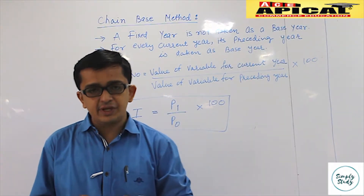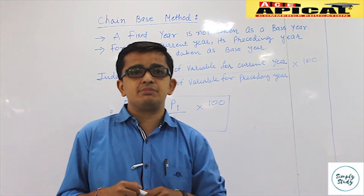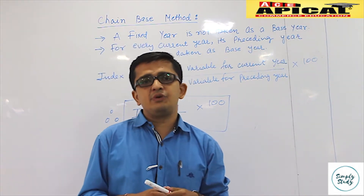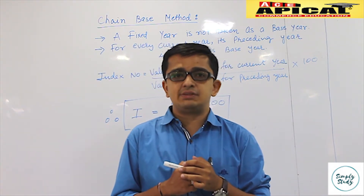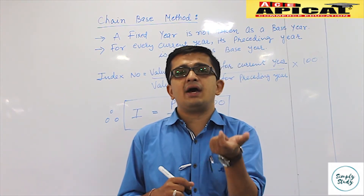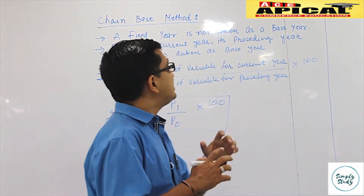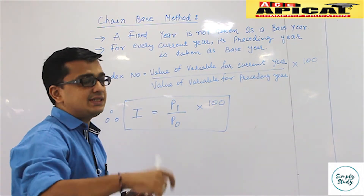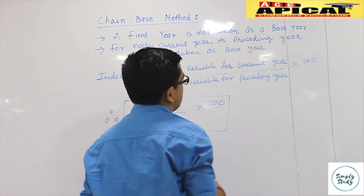In this video we will understand how to derive an index number using the chain base method. In the last video we already learned deriving index numbers using the fixed base method, where we used to take a particular fixed year as a base year. In this method, as the name indicates — chain base method — we won't have a fixed base year.